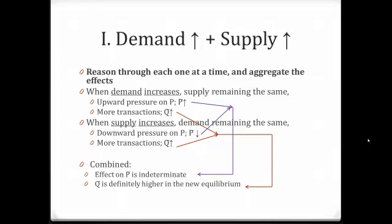Make sure you see what I meant by aggregating the effects. The upward pressure on equilibrium price from the higher demand and the downward pressure from the higher supply counteract each other — they work against each other — so we do not know what the effect on equilibrium price will be. But we know for sure that when we aggregate these two, they reinforce each other on quantity, so equilibrium quantity will definitely be higher. The effect on equilibrium price depends on the relative strength of the demand and supply factors. Let's look at a diagrammatic illustration of what we mean by the effect on equilibrium price being indeterminate, while equilibrium quantity will be higher in the new equilibrium.